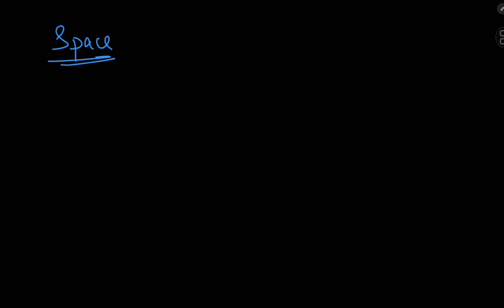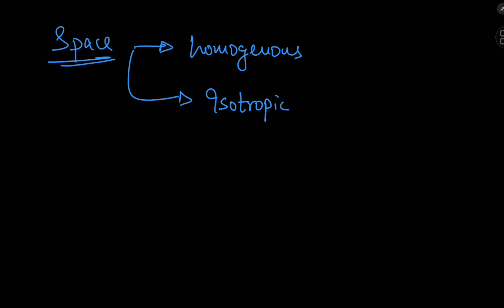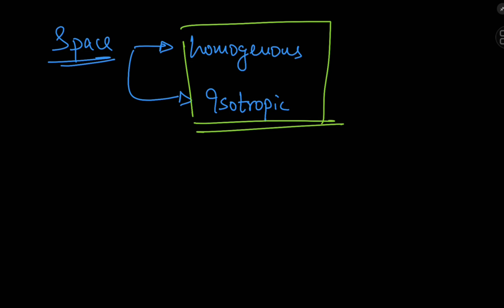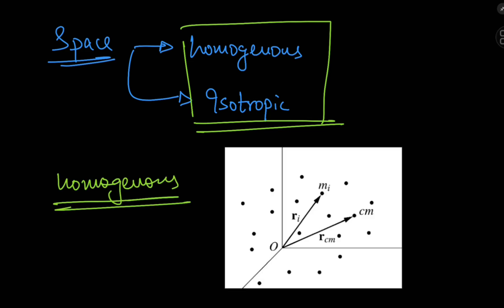I'm going to be talking about the symmetries in space that give rise to conservation theorems on momentum. Space actually has two symmetries that give rise to these conservation theorems, and those symmetries are space being both homogeneous and isotropic. What they mean essentially is that the laws of physics do not vary from place to place, but of course there is some technical difference between the terms.